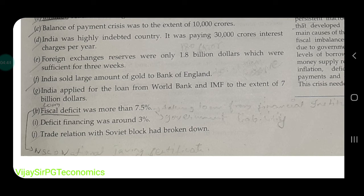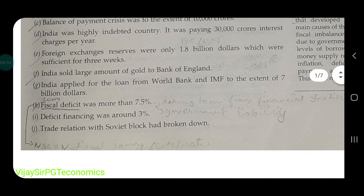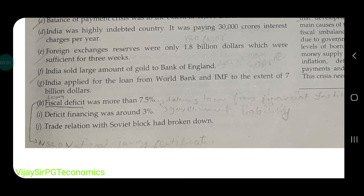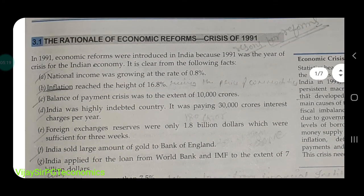The fiscal deficit was more than 7.5 percent. The ideal fiscal deficit should be around 3 percent, but India's was 7.5 percent — meaning there was still an excess deficit of around 4.5 percent. Additionally, trade relations with the Soviet bloc had broken down. These are the basic reasons why economic reforms of 1991 were introduced.